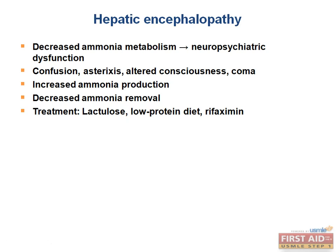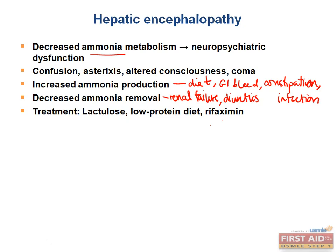Hepatic encephalopathy is another consequence of liver failure. As a result of cirrhosis and decreased hepatocyte function, toxic substances build up, such as ammonia, which can cause confusion, asterixis, altered levels of consciousness, and coma. This can be triggered by things that increase ammonia production — dietary protein, GI bleeds, constipation, and infection — or decrease ammonia removal, such as renal failure, diuretics, and post-TIPS. Treatment includes lactulose, which is metabolized by colonic bacteria and acidifies colonic contents, favoring formation of non-absorbable ammonium. Treatments also include a low-protein diet and rifaximin to kill intestinal bacteria.